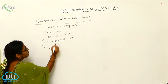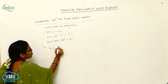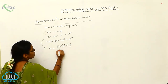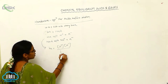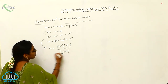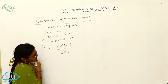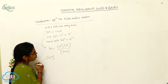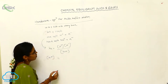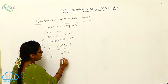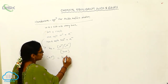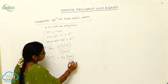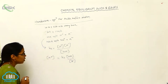For this, I want to write Ka. Ka is equal to the concentration of products by the concentration of reactants. From this, I want to calculate the concentration of H⁺ ion. So, [H⁺] = Ka × [HA] / [A⁻].